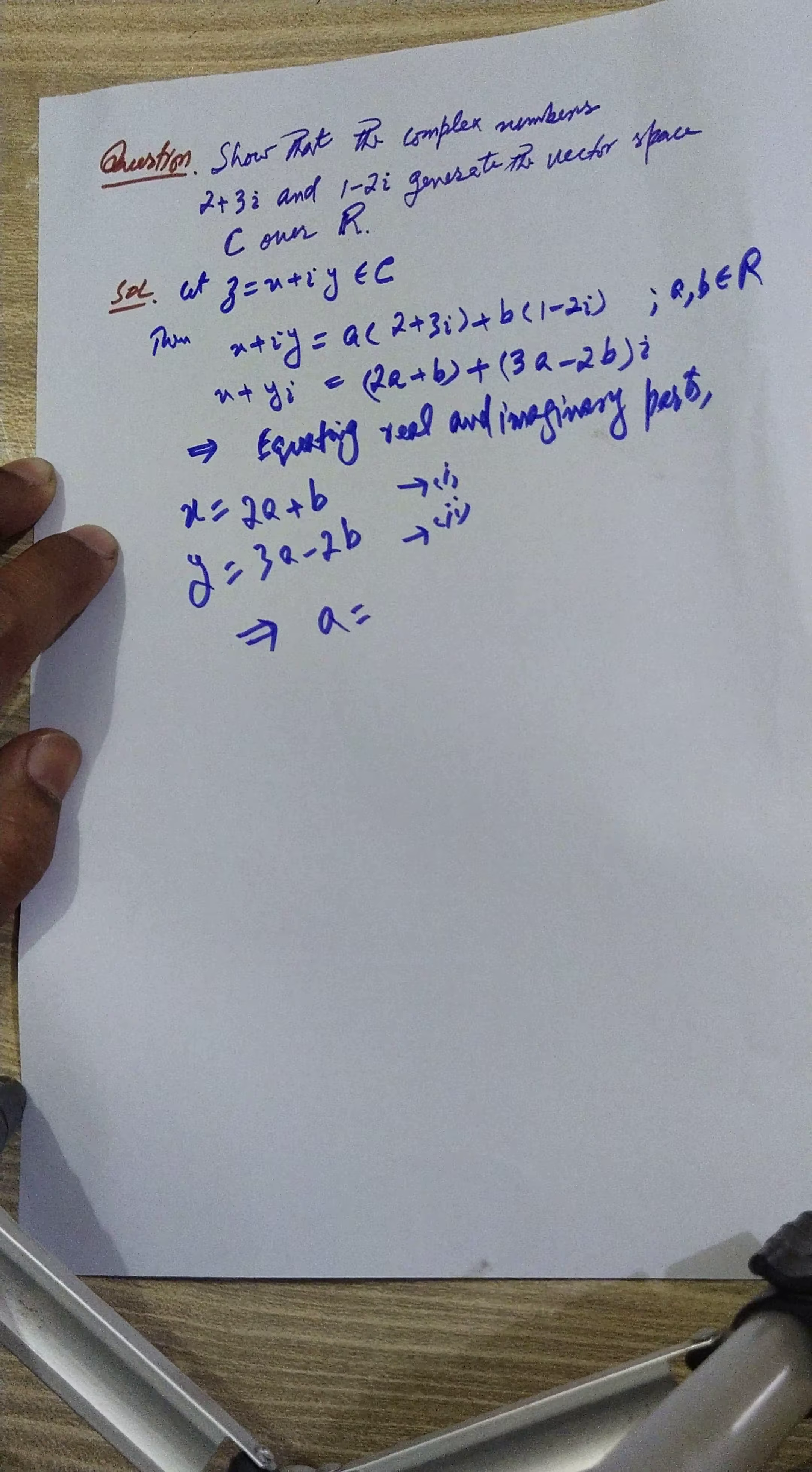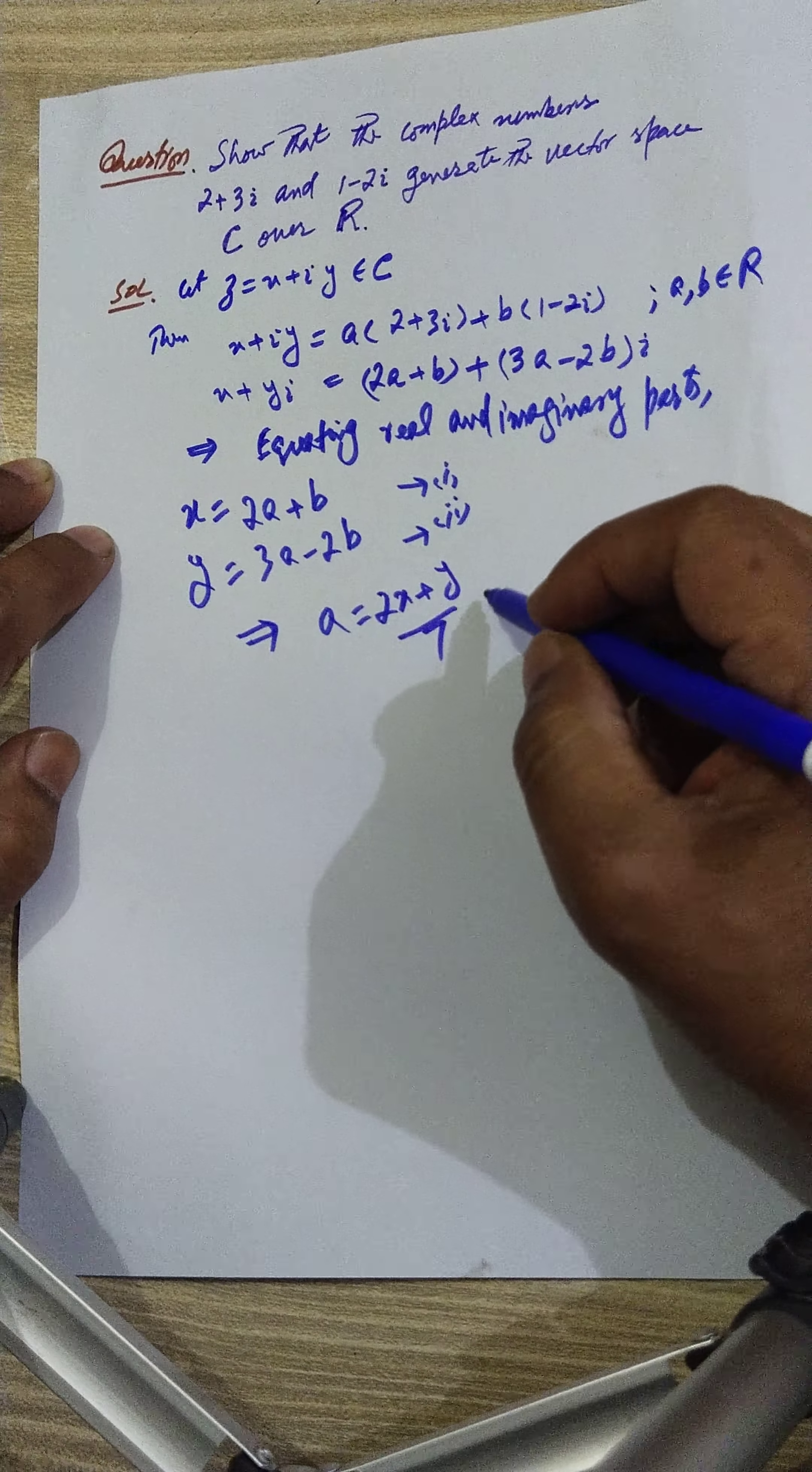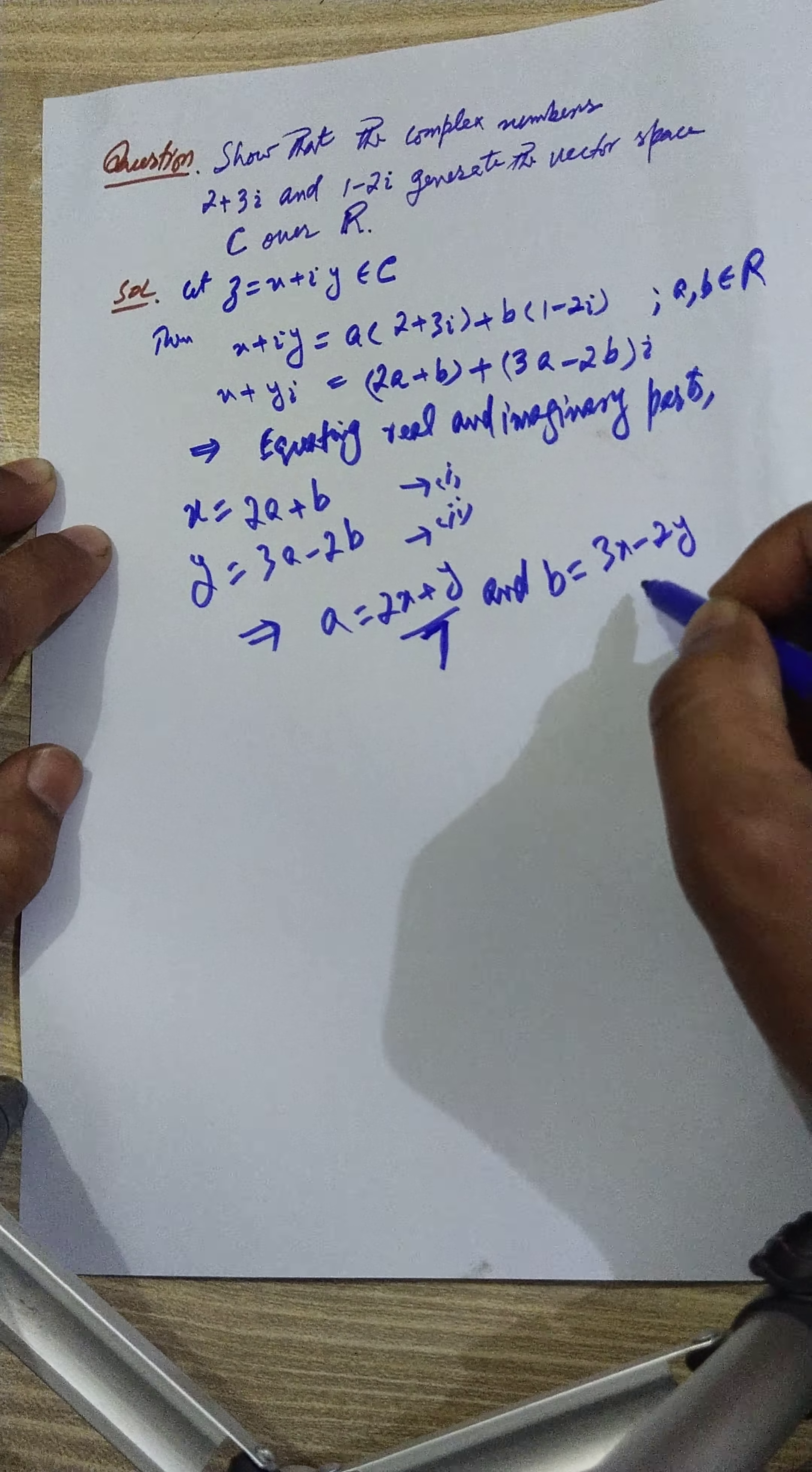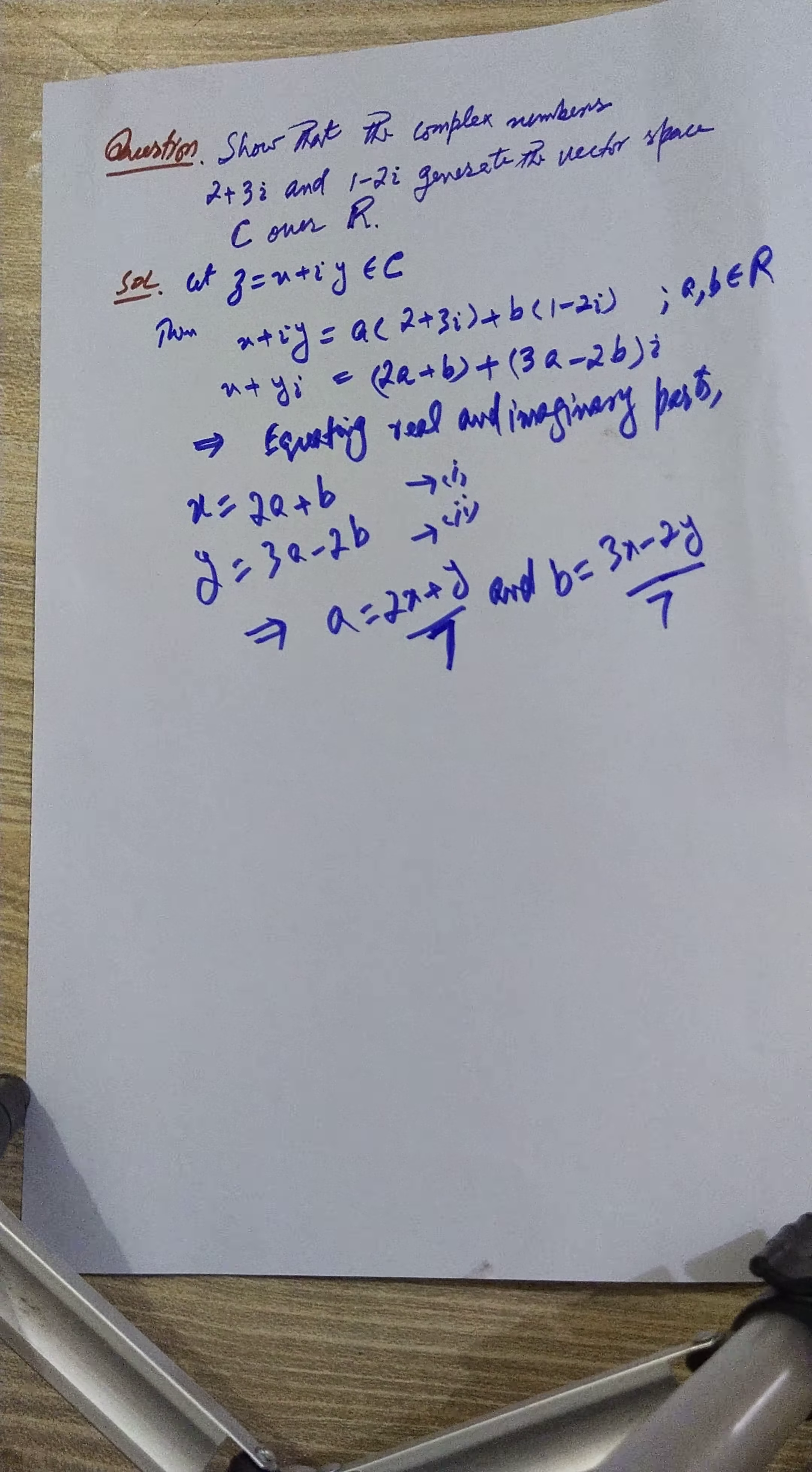If we solve these two, solving one and two, the value of a we get is 2x+y over 7, this is over seven, and b's value comes out to be 3x-2y over 7.